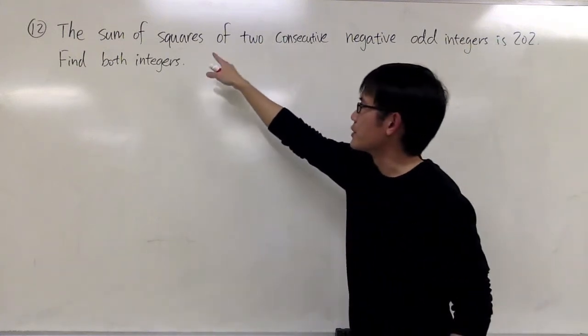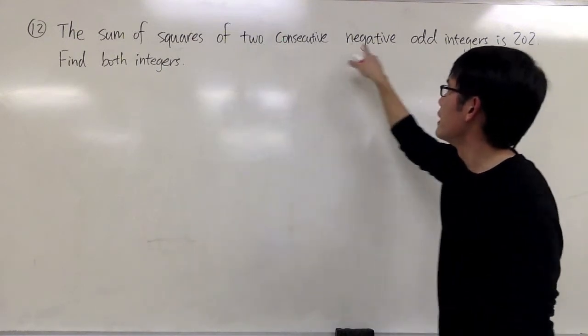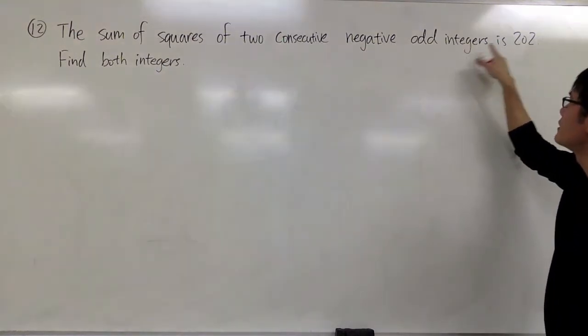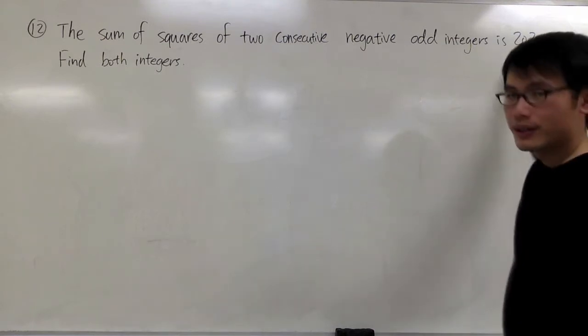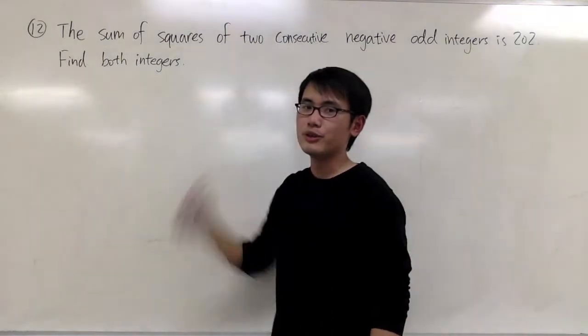It says the sum of squares of two consecutive negative odd integers is 202, and we're trying to find out both integers.